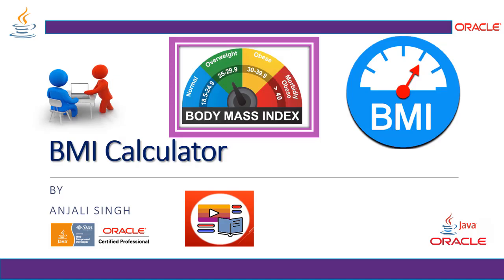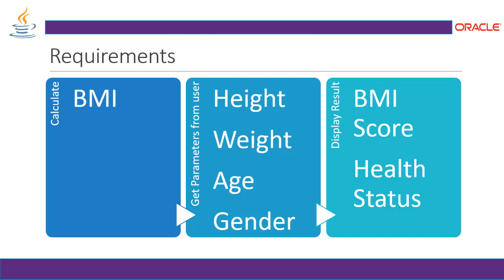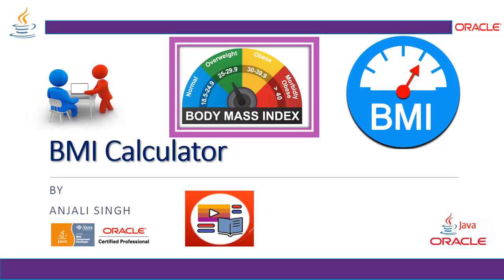Practice Project Ideas: BMI Body Mass Index Calculator. BMI stands for Body Mass Index and this particular utility is used for medical services. We are going to get the user values and their health parameters like height, weight, age and gender, and based on these parameters, we are going to calculate the BMI score which will tell you the health status.